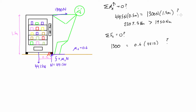So checking: 1300 newtons applied force versus 0.6 × 4415 = 2649 newtons maximum friction force. The right-hand side is bigger. This means 2649 newtons is the maximum friction force resisting slip, and since 1300 is less than 2649, the vending machine will not slip. So pulling at 1300 newtons at the top, the vending machine will neither tip nor slip.